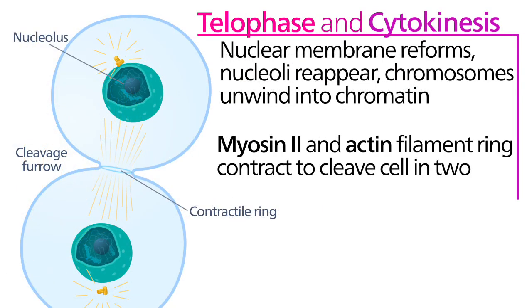Telophase. This is the stage that officially completes mitosis. New nuclear envelopes form around each set of new chromosomes. The chromosomes decondense and the spindle fibers disappear.